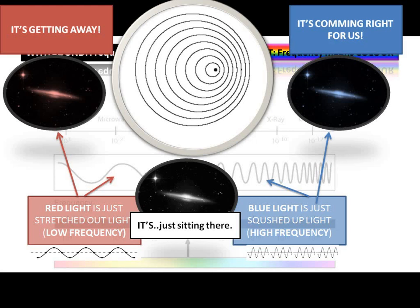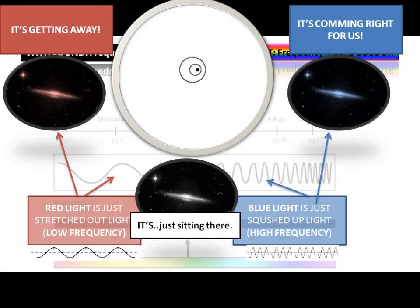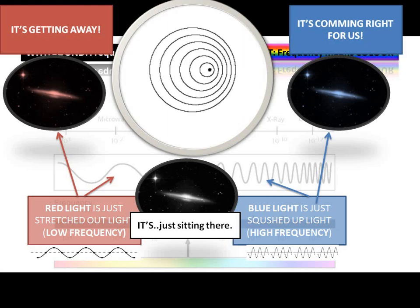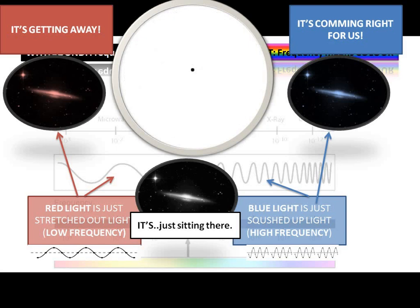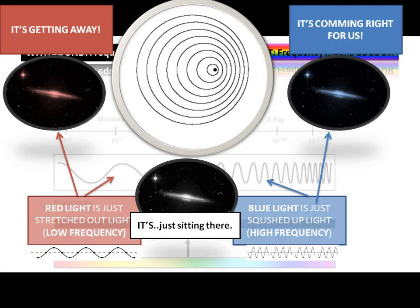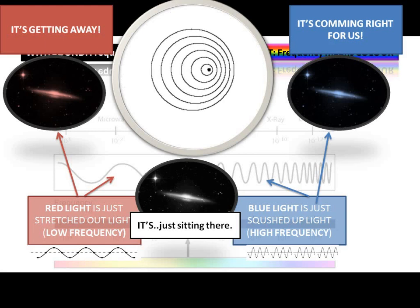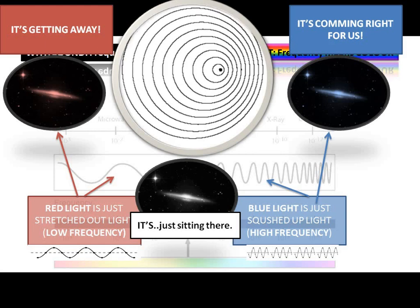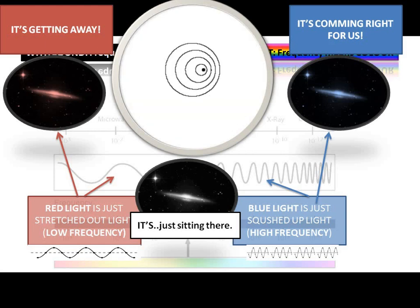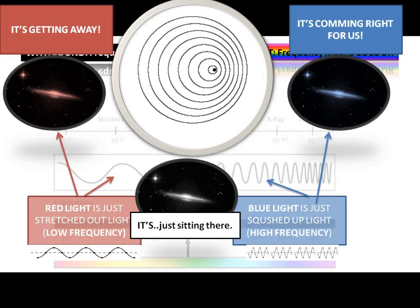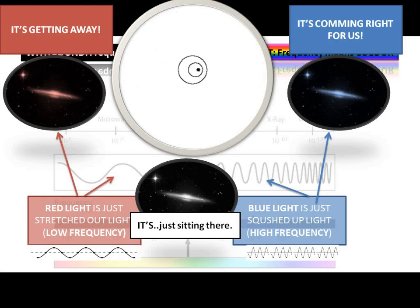So, in summary, if a galaxy is getting away, going away, it's going to be redshift. If it's just sitting there, not really doing anything, or maybe it's going around us in circles and it's the same distance, it's going to be the same color. It's not going to do anything. And if it's coming straight for us, it's going to be blue. And if it's coming straight for us even faster, it's going to be more blue.